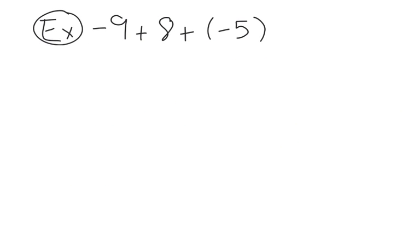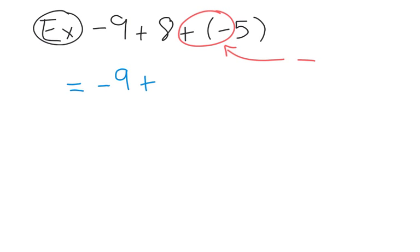In our third example, we have negative nine plus eight plus negative five. Again, the first thing you want to do is simplify the signs. We have a plus sign beside a minus sign — when you have a plus sign beside a minus sign, that actually becomes minus. So let's rewrite our question as negative nine plus eight subtract five.